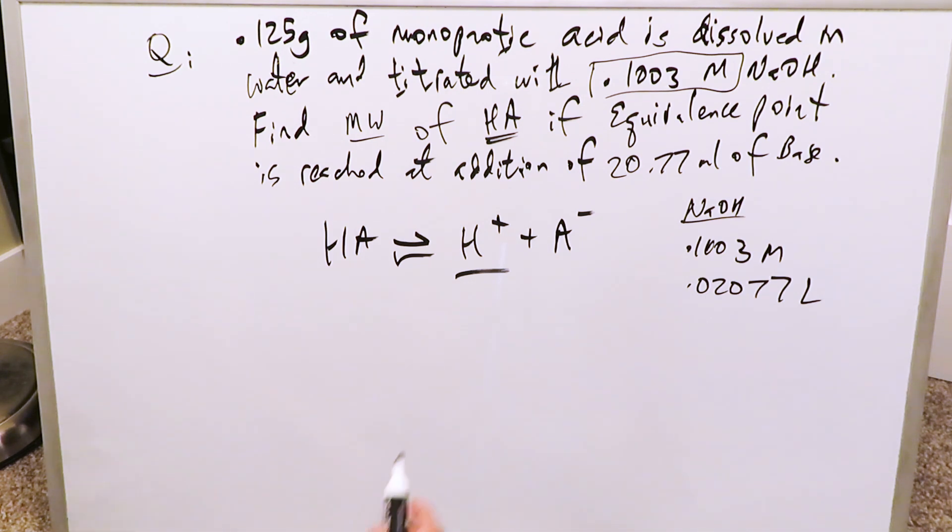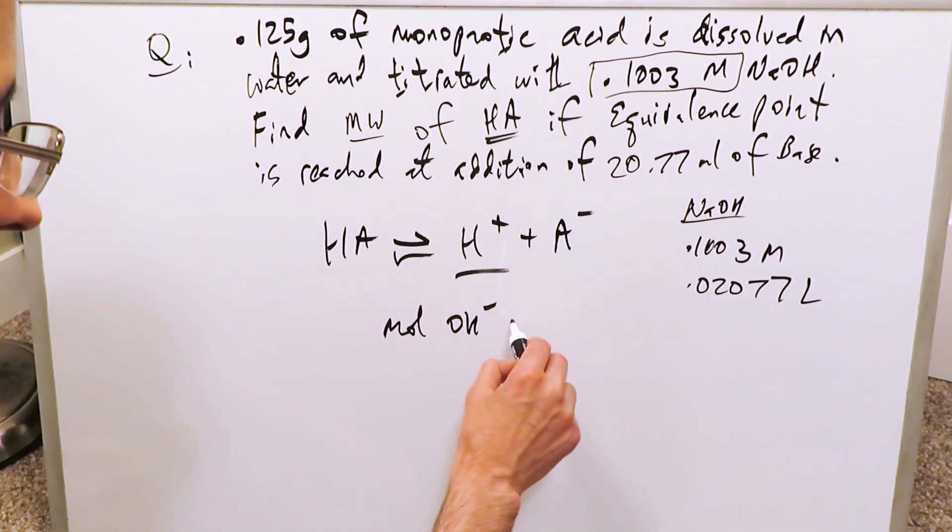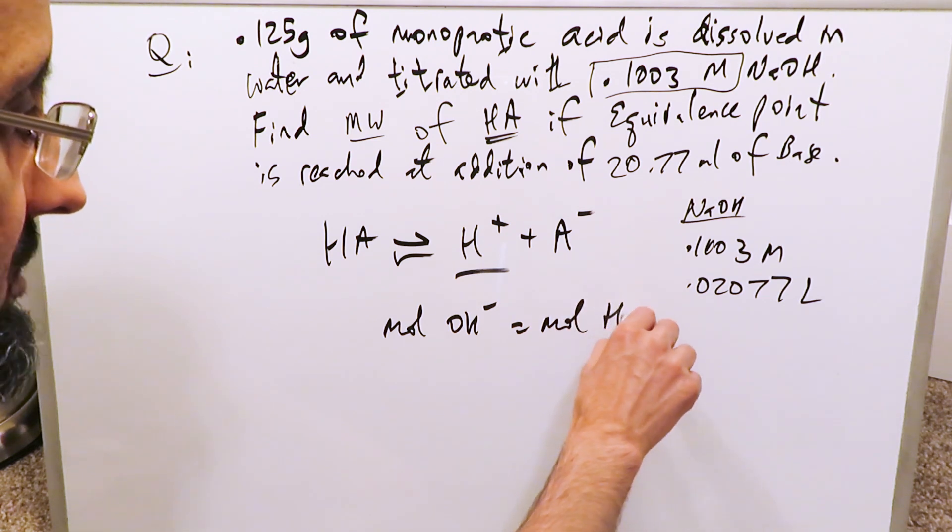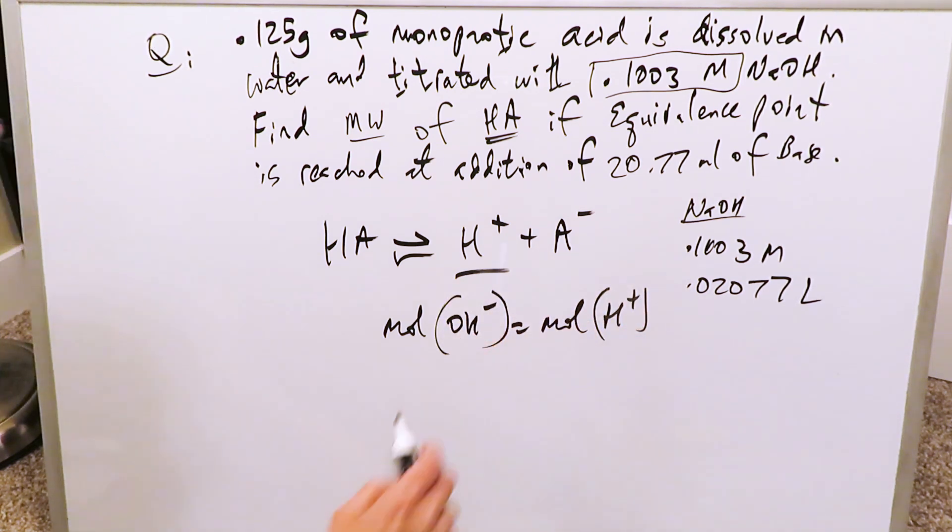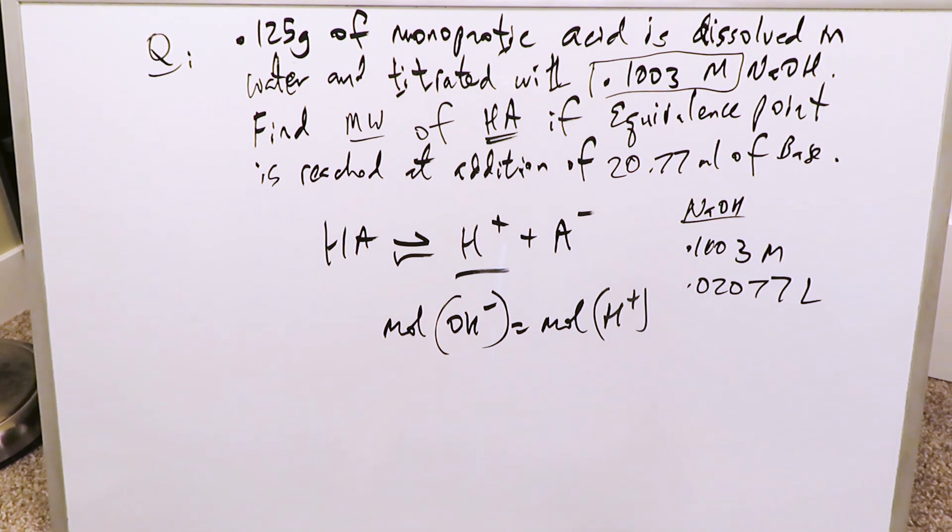Remember, at equivalence point, moles OH, your base, is equal to moles H plus your acid. At equivalence point, during the titration, you reach the equivalence point when the indicator changes color in terms of the solution.